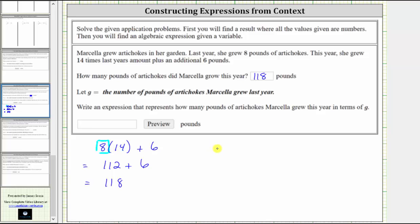Substituting G for eight gives us G times 14 plus six. G times 14 is equal to 14G, which gives us the expression 14G plus six. This expression gives us the number of pounds of artichokes Marcella grew this year, given G, where G is the number of pounds of artichokes Marcella grew last year.